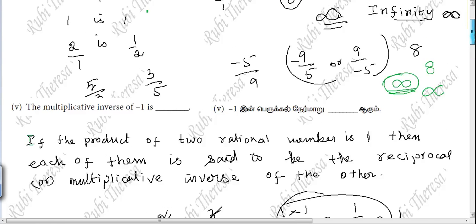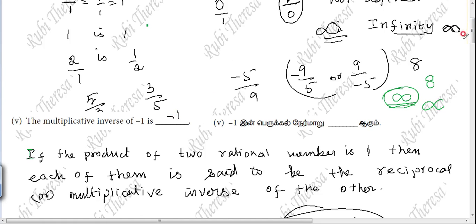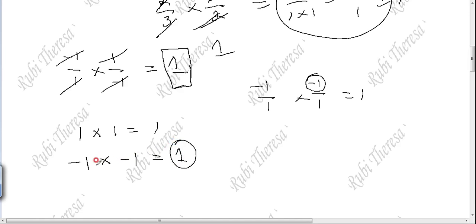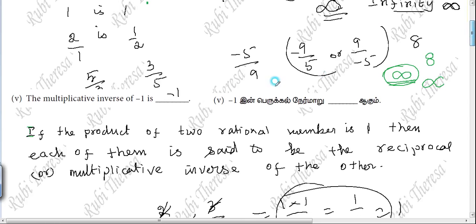The multiplicative inverse of minus 1 is minus 1. Then they are multiplicative inverses — otherwise, reciprocals — of each other.